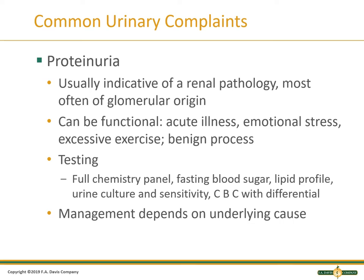Testing requires a chemistry panel. We need to see what those electrolytes are — sodium, potassium, calcium, BUN and creatinine. We need to know their liver functions, fasting blood sugar (are they pre-diabetic or diabetic?), and their lipid profile — are their triglycerides high? Also obtain urine culture and sensitivity, urine cytology, and a CBC with differential, which gives us a breakdown of immature versus mature cells to determine if this is new or chronic.